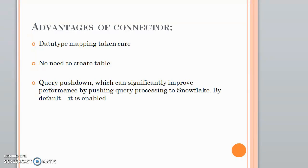Now, what are the advantages of the Spark Snowflake connector? The first advantage is data type mapping. When you read data from Hive and write it into Snowflake — a cloud database different from the Hadoop ecosystem — the connector handles the data type conversion automatically. It maps Hive data types to Snowflake equivalents and creates the table for you; you don't need to create the table manually inside Snowflake.